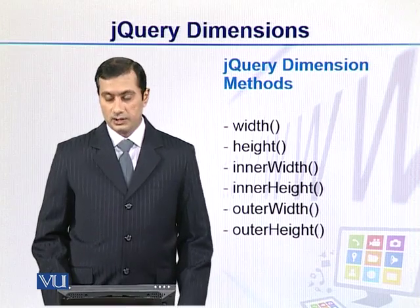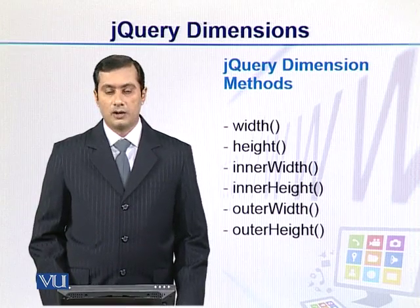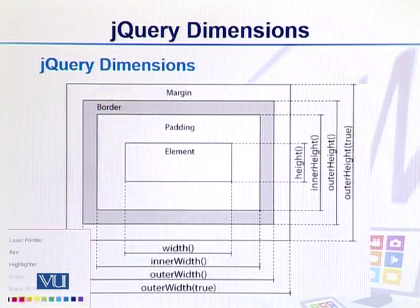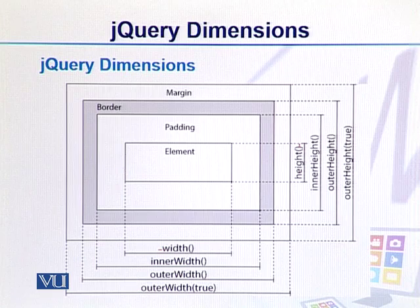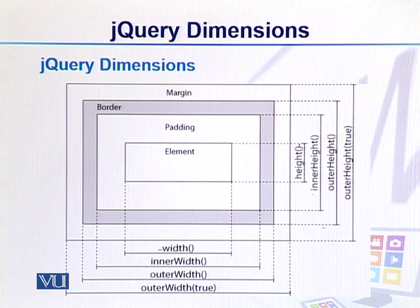The available methods are simply: width, height, innerWidth, innerHeight, outerWidth, and outerHeight. Looking at this diagram, the standard width and height represent the element's basic dimensions. innerHeight includes padding. outerHeight includes even the border, and if we pass the parameter true to outerHeight, it also includes the margin.